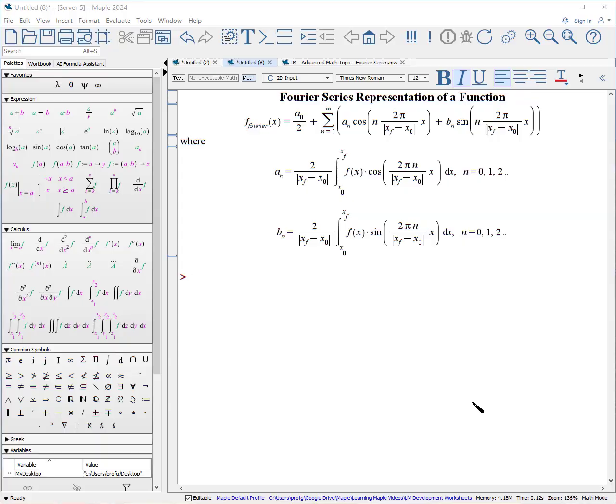There are many ways to provide a Fourier series representation of a function. I'm going to use this particular definition of the representation. You can obviously make changes. X sub f and x sub zero are the endpoints. Here are the coefficients a sub n and b sub n are defined.